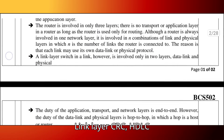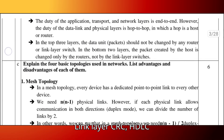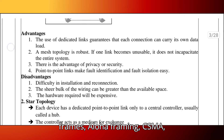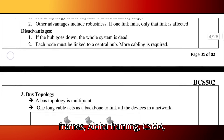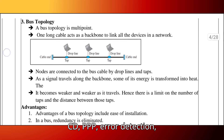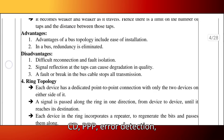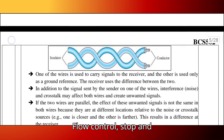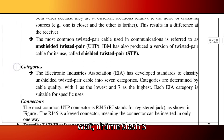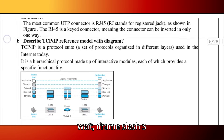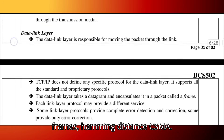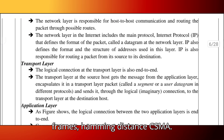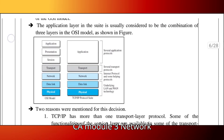Module 2 covers the data link layer, including CRC, HDLC frames, ALOHA, framing, CSMA/CD, PPP, error detection, flow control, stop-and-wait, I-frames and S-frames, Hamming distance, and CSMA/CA.